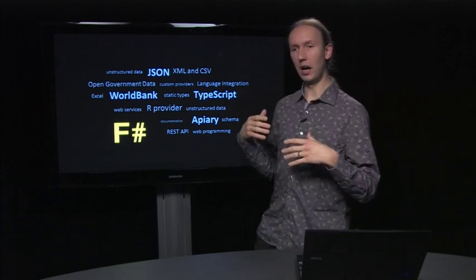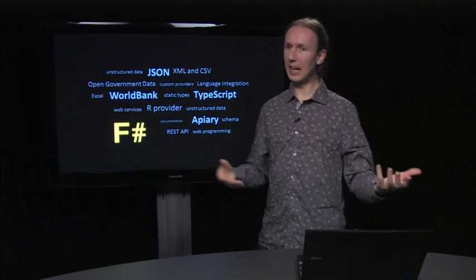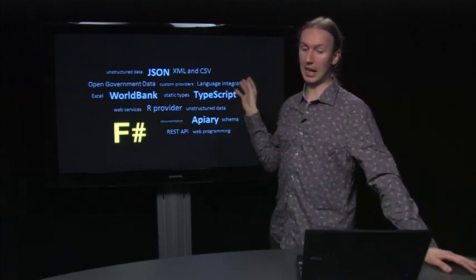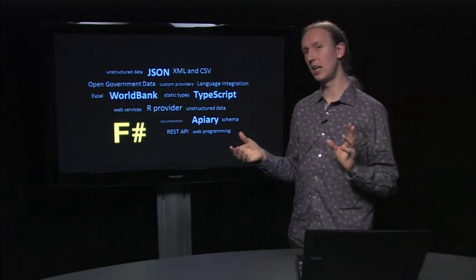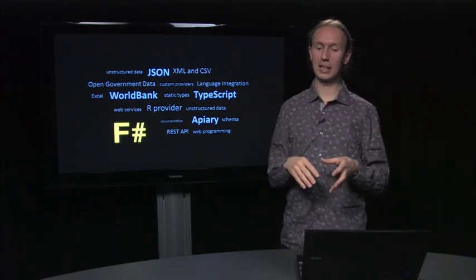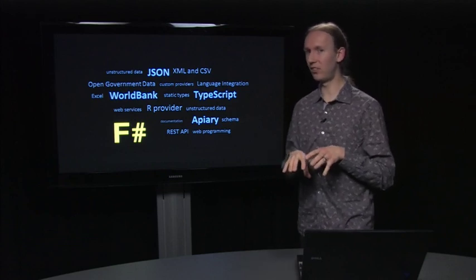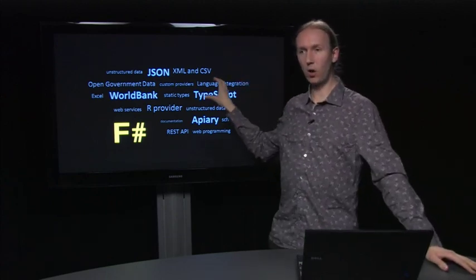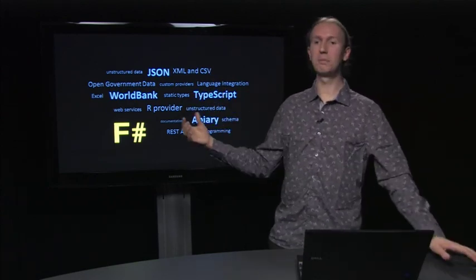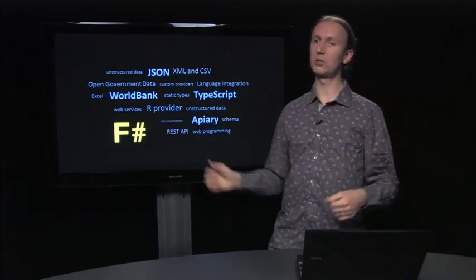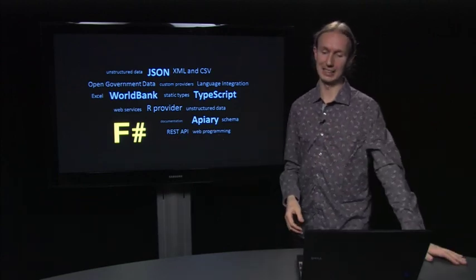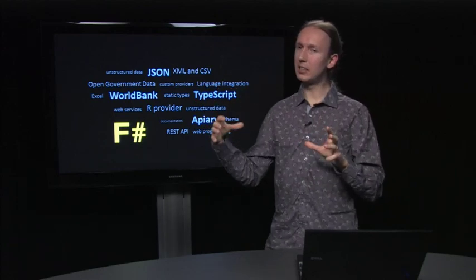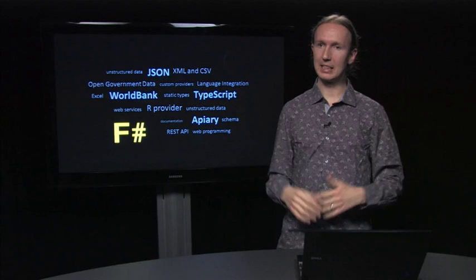We used the JSON type provider, which works for any data file and infers the structure — very universal, with similar providers for XML and CSV. You can use it to work with open government data or lots of data sources available on the web. We also used the fairly specific World Bank type provider, which is really tuned to work against one specific API. If you have any other interesting data source, you can write a type provider — for example for finance data to get stock prices in a type-safe way. The TypeScript provider is of a quite different kind: it doesn't access data, it just lets us integrate with other programming languages, which is a really powerful and interesting feature. There are various F# projects that let you call R, the statistics language, from F# in a typed way.